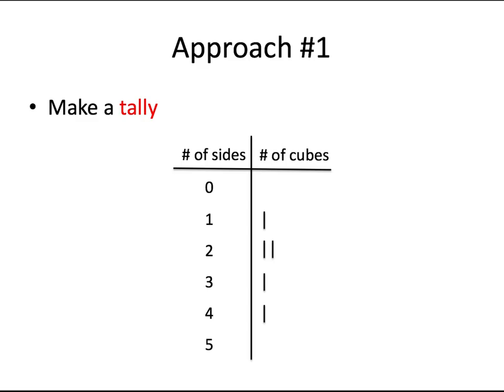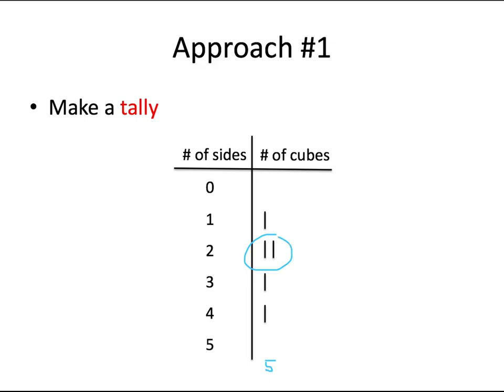Probably the most popular approach is to make a list from zero to five and tally the cubes. So when you get to the figure, you go through one cube at a time and make a tally next to how many painted sides each cube has until you have all the cubes accounted for. Then you can count the total amount of cubes and tallies to confirm accuracy. If the question asks how many cubes have two sides painted, you just look at your tally and answer. This is a completely valid strategy.